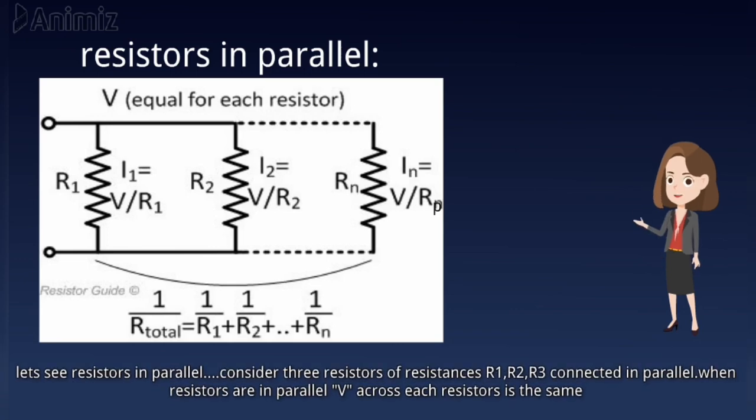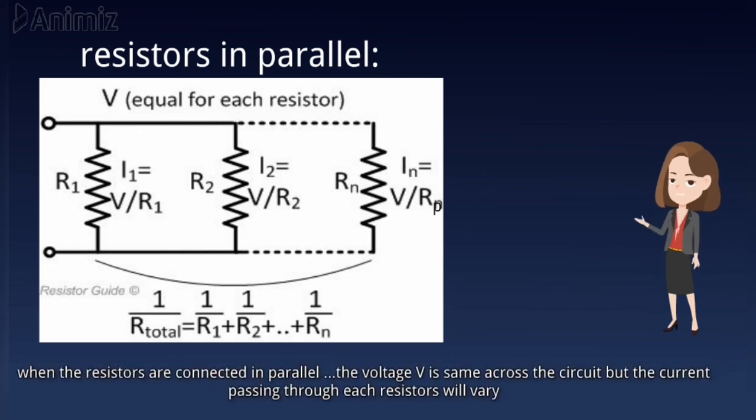Let us move on to the next one. Resistor in parallel. Consider three resistors of resistance R1, R2, R3 connected in parallel. When resistors are in parallel, V across each resistor is the same. When resistors are connected in parallel, the voltage V is same across the circuit, but the current passing through each resistor will vary.